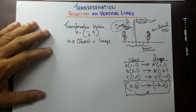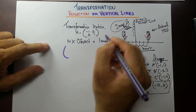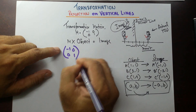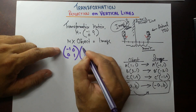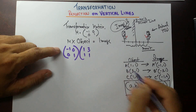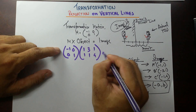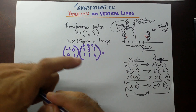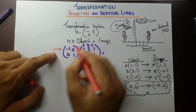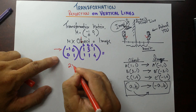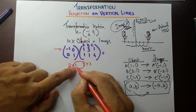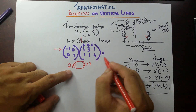Let's try this one. The transformation matrix would be [[-1, 0], [0, 1]], and the object matrix — A is (1,1), B is (3,1), C is (1,4). Now, I hope you remember matrix multiplication: this row with this column. This is a 2×2 matrix and this is a 2×3 matrix. If the number of columns in the first matrix equals the number of rows in the second, then matrix multiplication is possible, and the matrix product will have order 2×3.